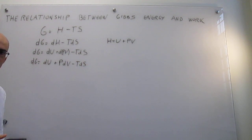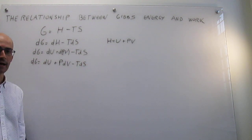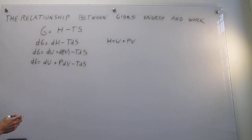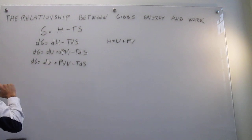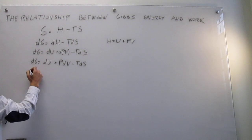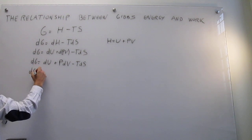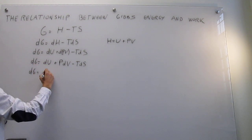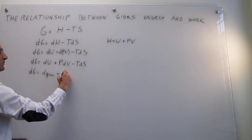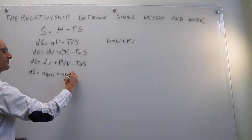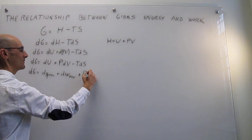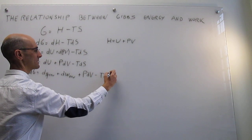Let's review the conditions: we have assumed isothermal and isobaric conditions. The next step is to plug in the first law of thermodynamics for a reversible process. For a reversible process, dU equals the reversible heat plus the reversible work, giving us: dG = dq_rev + dw_rev + p dV - T dS.